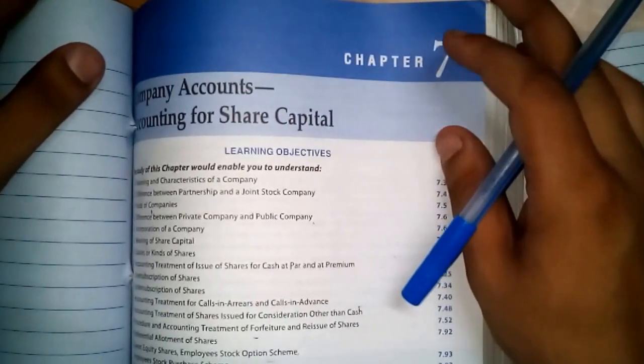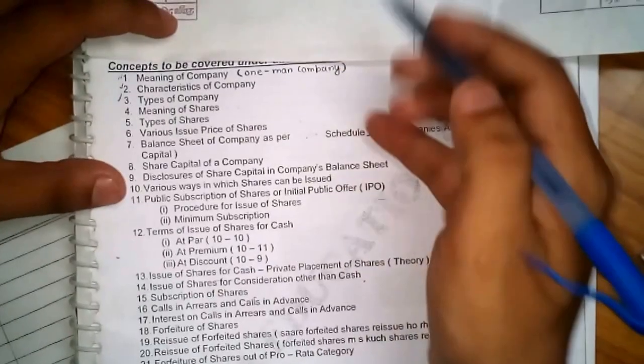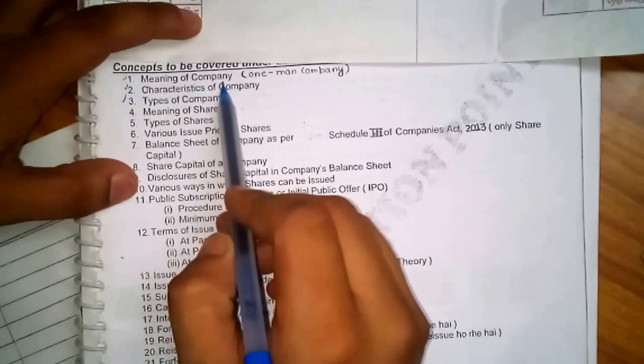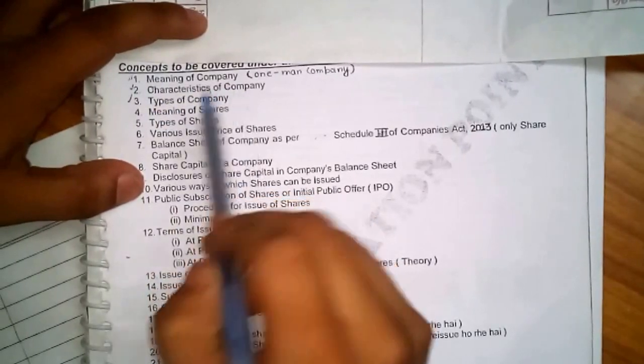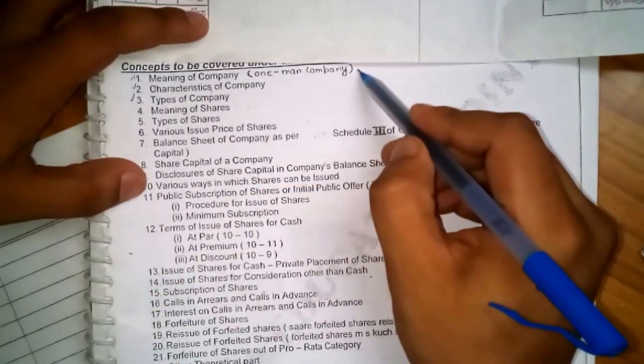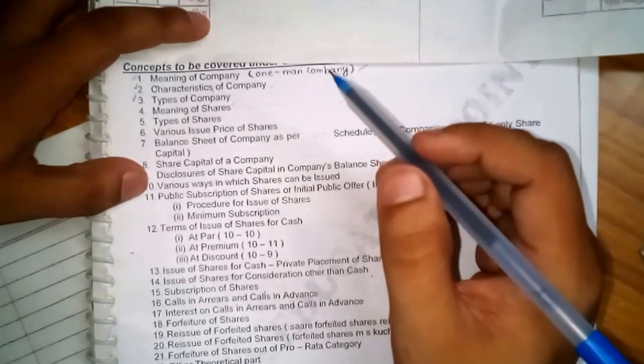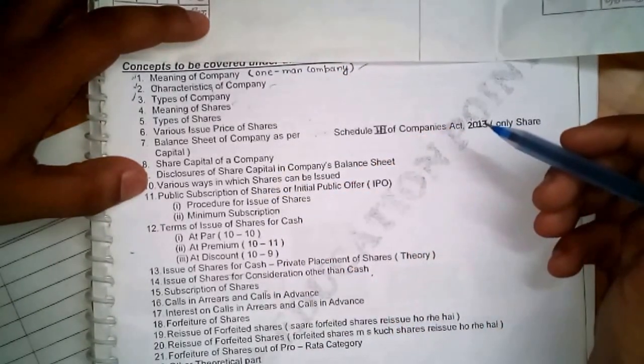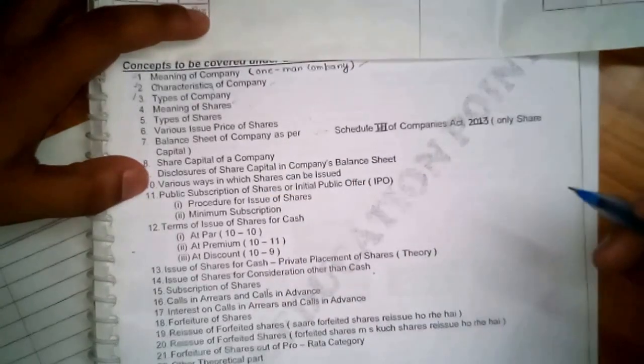In the previous class we covered three topics: the meaning of the company, characteristics of the company. These three topics are clear. If you have any query, you can put it in the comments below.